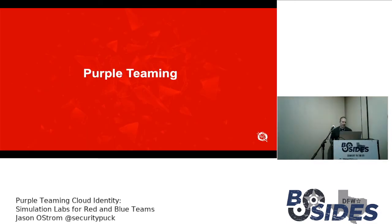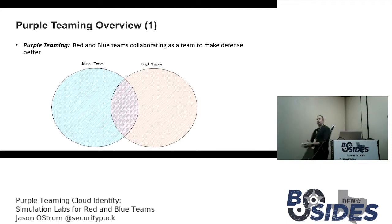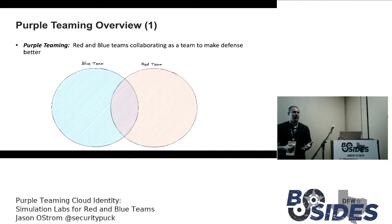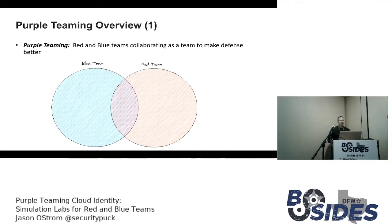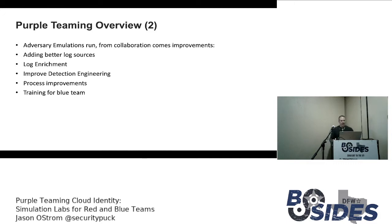Let's talk about purple teaming. We're all in this together to make our security programs better. It's really the red and the blue team working together. The red team is going to find the vulnerabilities and work with the blue team to instrument log sources that are enriched, making sure the blue team is trained. We work on detection engineering, improving log sources — that's the concept of purple teaming.